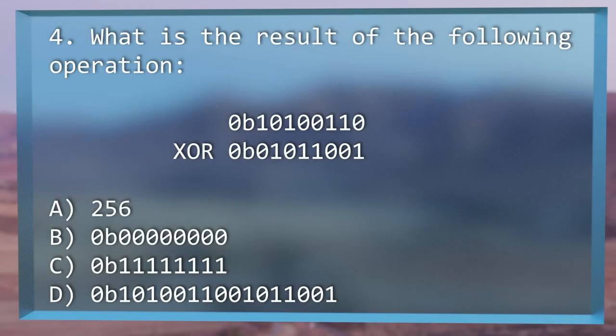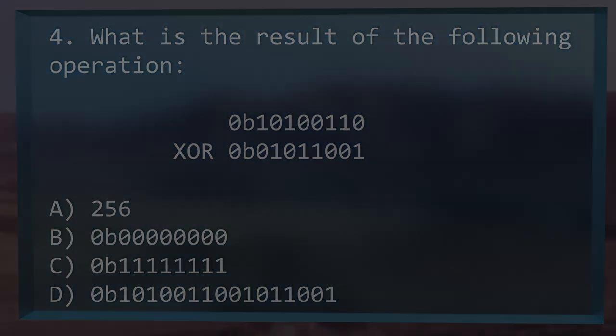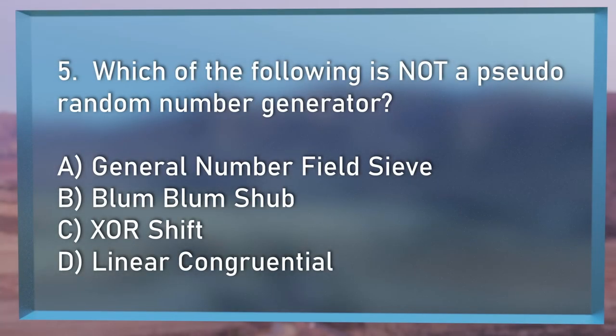Question number 4 — a little bit of a binary operation. What is 10100110 XOR 01011001? What would you end up with if you XORed those two bytes together? Would it be A, 256; B, 00000000; C, 11111111; or D, 1010011001011001? One of those is the correct XOR result.